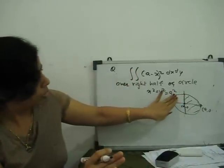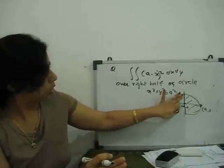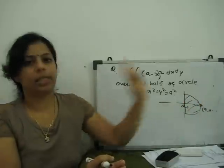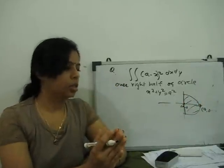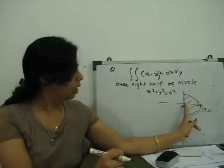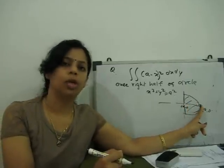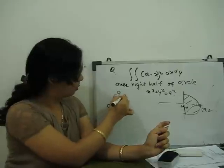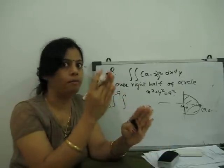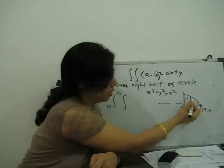Now we go for this. In this case, you see that our x is always changing from 0 to a. X is not going more than a. So our limit of x is 0 to a. But what is the limit of y? Now you see, let me make a strip.